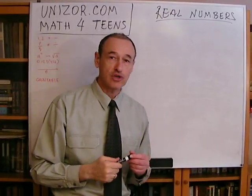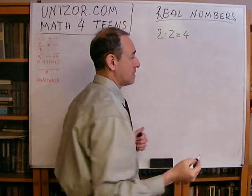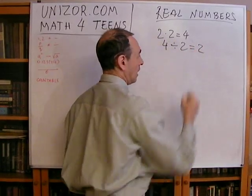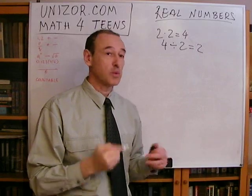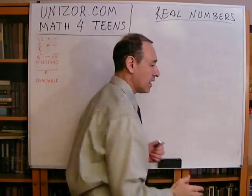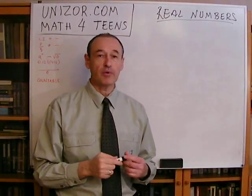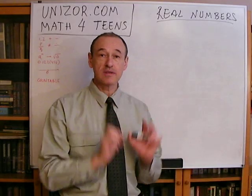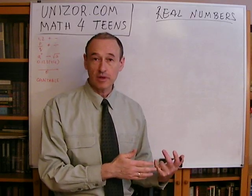Then the operation of multiplication was invented, like two times two equals four. Then, obviously, the reverse operation — division. And they realized that negative or positive numbers are not sufficient to satisfy division. We cannot divide three by five. So they invented rational numbers. Every time people invented certain numbers and operations, if those operations eventually led to an inability to perform them within the existing framework, they invented new numbers. They couldn't do division among integers, so they invented rationals.